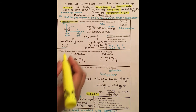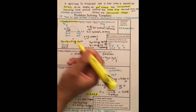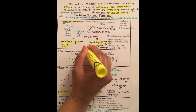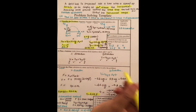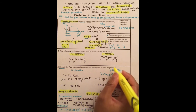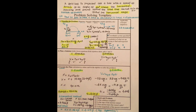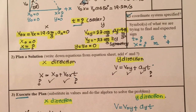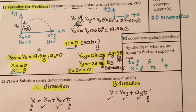Let's review the solution steps: we visualized the problem first, identified knowns and unknowns in both directions, noted that time is a scalar common to both, then looked at equations for x and y directions separately and executed the plan — solving for time from y-direction and using that time in the x-direction. The signs are correct, the units are correct, and the magnitude is reasonable: it takes about 5 seconds to travel 90 meters in the x-direction, which makes sense.